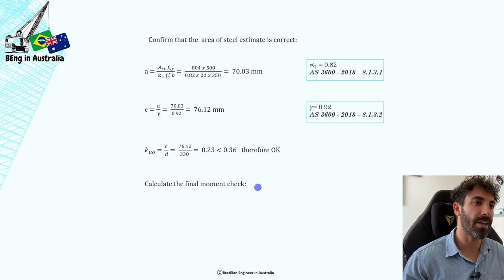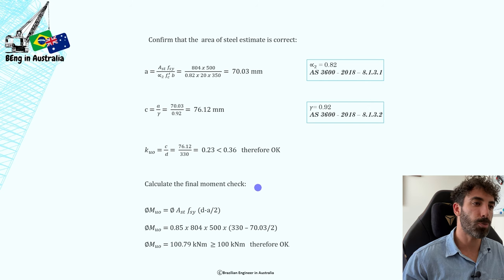So after that, we're going to calculate the final moment check, which is pretty much the same formula that we saw before, rearranged to calculate phi mu. We get that phi mu is 100.79 kilonewton meters, which is greater than 100 kilonewton meters, therefore we are okay. It passes.